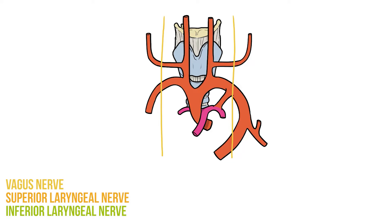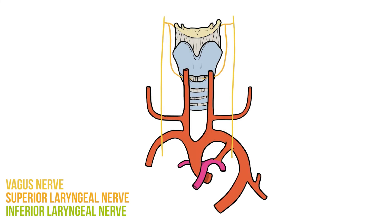During our embryological development, precursors of the larynx and the arteries sit at roughly the same vertical level. At this stage both laryngeal nerves head straight to the larynx, passing in between the great vessels. However as the body continues to grow, the vessels move inferiorly, heading down into the chest. The superior laryngeal nerve can move out of the way and stay at the same level, but the inferior nerves get trapped under the arteries and become stretched, creating the long recurrent nerves we find in the adult.